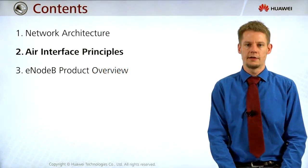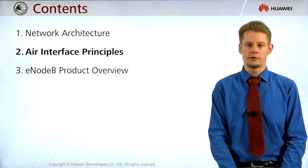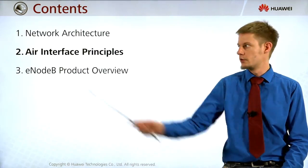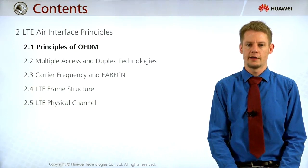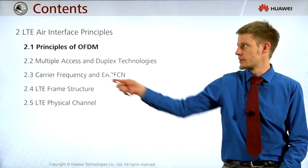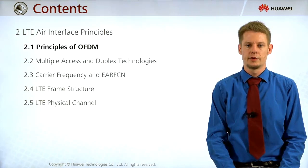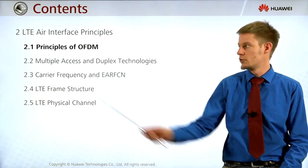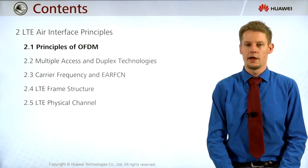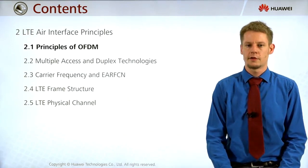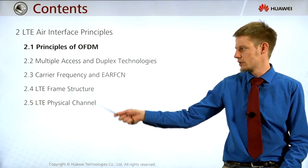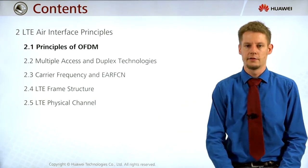Welcome back to the course LTE system overview. We are now talking about Chapter 2: air interface principles. Chapter 2 is divided into five sub-chapters. The first one is principles of OFDM. Then we will talk about multiple access and duplex technologies, carrier frequency and EARFCN, and the last two sub-chapters are called LTE frame structure and LTE physical channel.